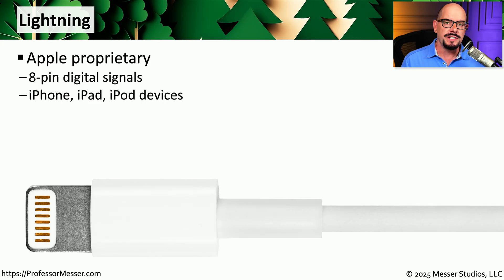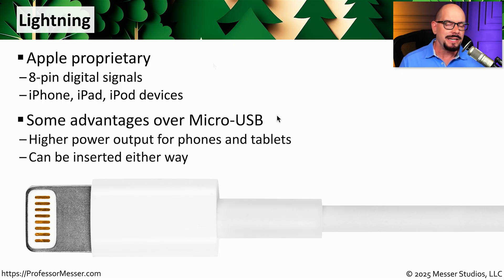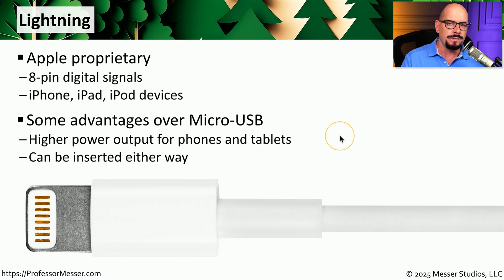Many newer mobile devices use USB connections for power and data, but if you're using an older Apple device, you may be using a Lightning connector. Lightning is an Apple proprietary connector, so you'll only see it used with Apple products — usually iPhones, iPads, and similar devices. When Lightning was introduced, micro USB was the commonly seen connector on mobile devices, but Apple wanted additional power capabilities and a connector that could be inserted either way and still operate normally. Although the industry is moving towards USB-C as a standard, you may still find some devices using Lightning connections.